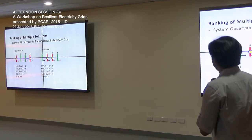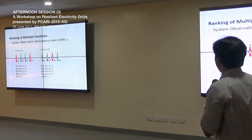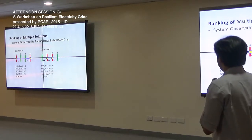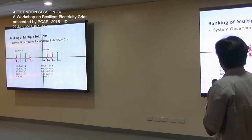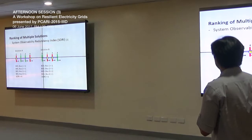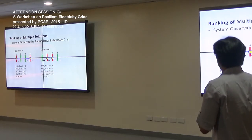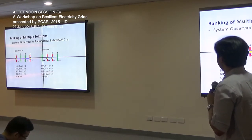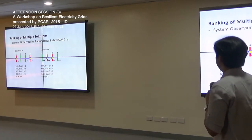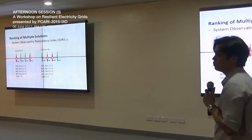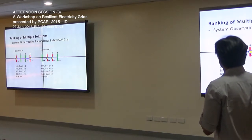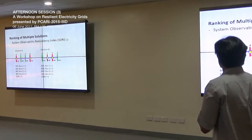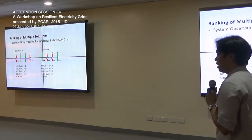With the System Observability Redundancy Index, in Solution A, buses 1, 2, 3, and 4 are only observable once — a summation of 4. In Solution B, placing PMUs in buses 2 and 3 gives a redundancy index of 6, which is better. In Solution A, if you have a PMU outage in bus 1, buses 1 and 2 will not be observable. In Solution B, a single PMU outage in bus 2 still leaves buses 2, 3, and 4 observable.